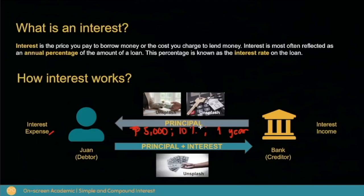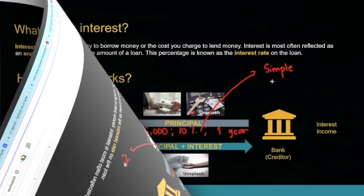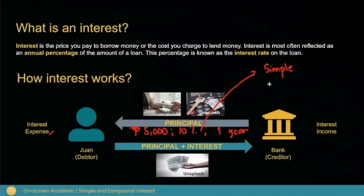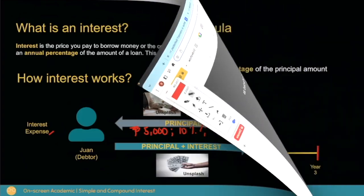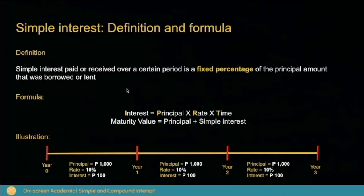Now, let's talk about how we can compute the amount of interest. Interest can be computed in two ways — it can be simple interest or compound interest. Simple interest paid or received over a certain period is a fixed percentage of a principal amount that was borrowed or lent.